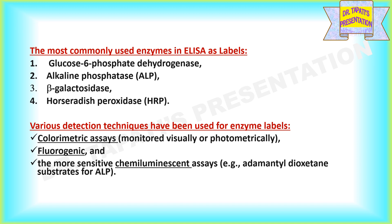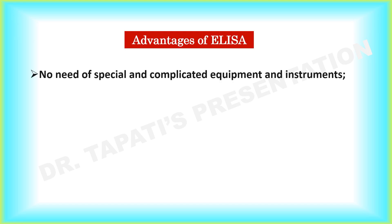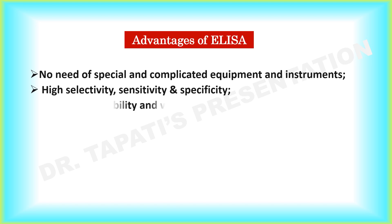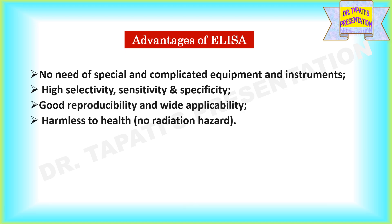fluorogenic assays, and more sensitive chemiluminescence assays. Compared to other enzyme immunoassays like immunofluorescence or radioimmunoassay, ELISA techniques show several advantages like no need for special and complicated equipment and instruments, high sensitivity, good reproducibility, and harmless to health.